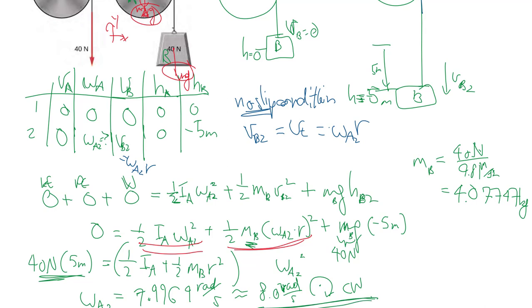So a quick recap, we talked about how you have to now consider both the translation of the center mass of different bodies in the system, as well as the rotation. And there are many cases where we can use this no slip condition to relate the translational speed of a part of a system to the rotational speed of another.